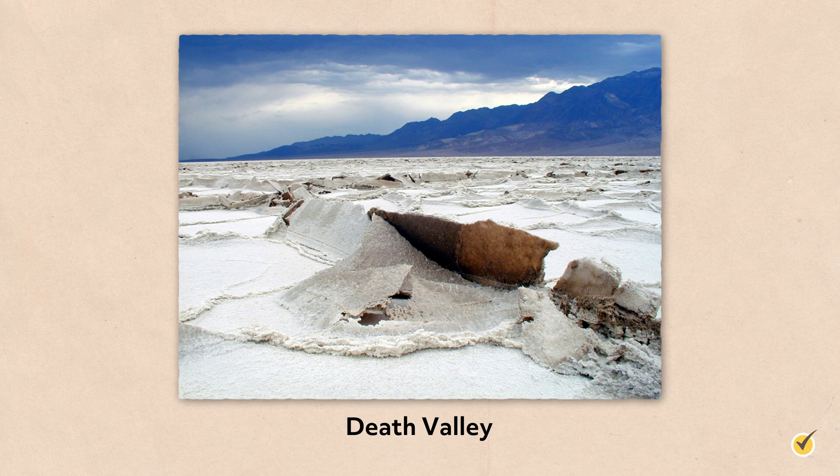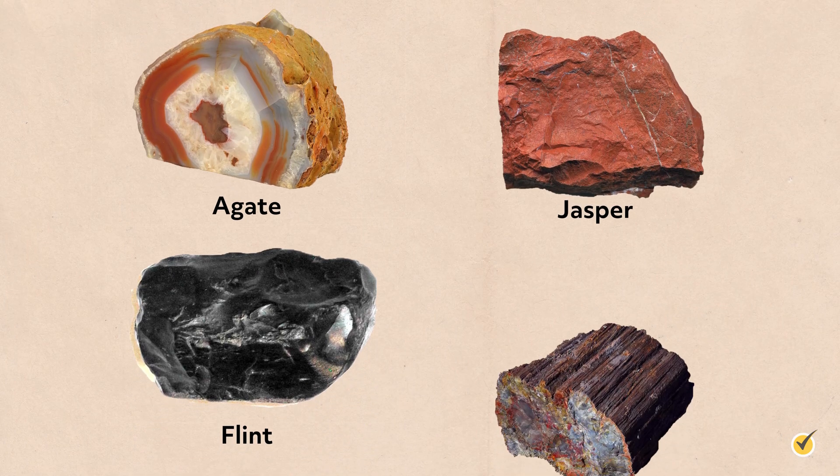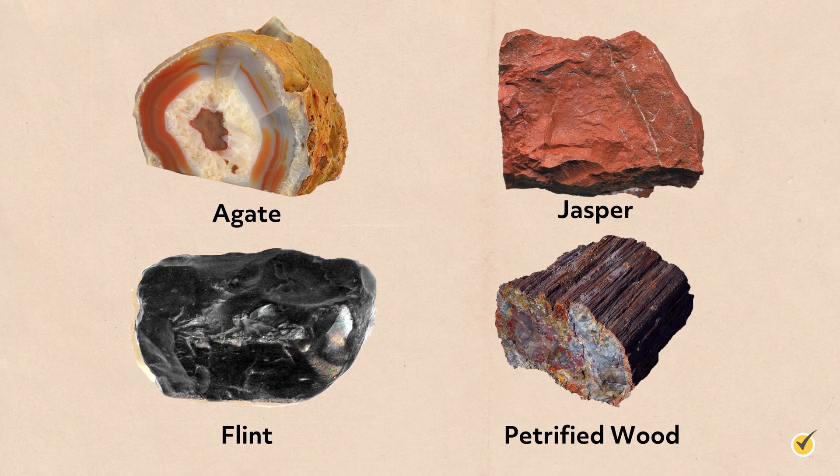Another example of a chemical sedimentary rock is chert, which is composed of microcrystalline quartz. Chert forms when dissolved silica materials, like quartz, precipitate out of a solution. Flint, jasper, and agate are different varieties of chert.